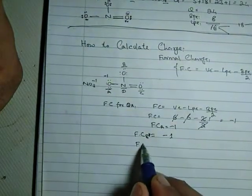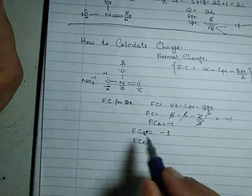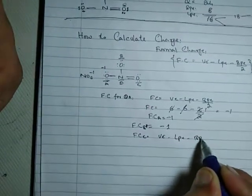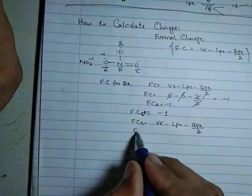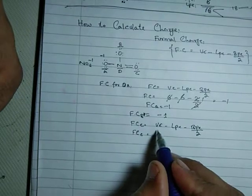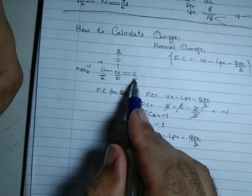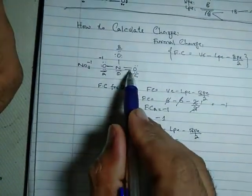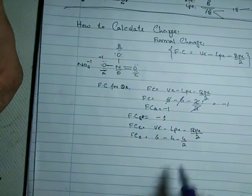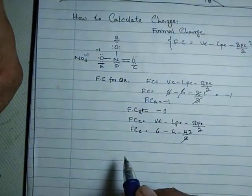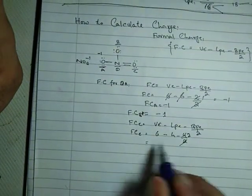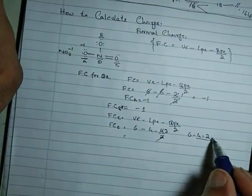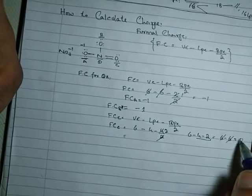Now FC for oxygen C. VE minus LPE minus BPE divided by 2. That's 6 minus lone pair electrons 4, minus bond pair electrons 4 divided by 2.